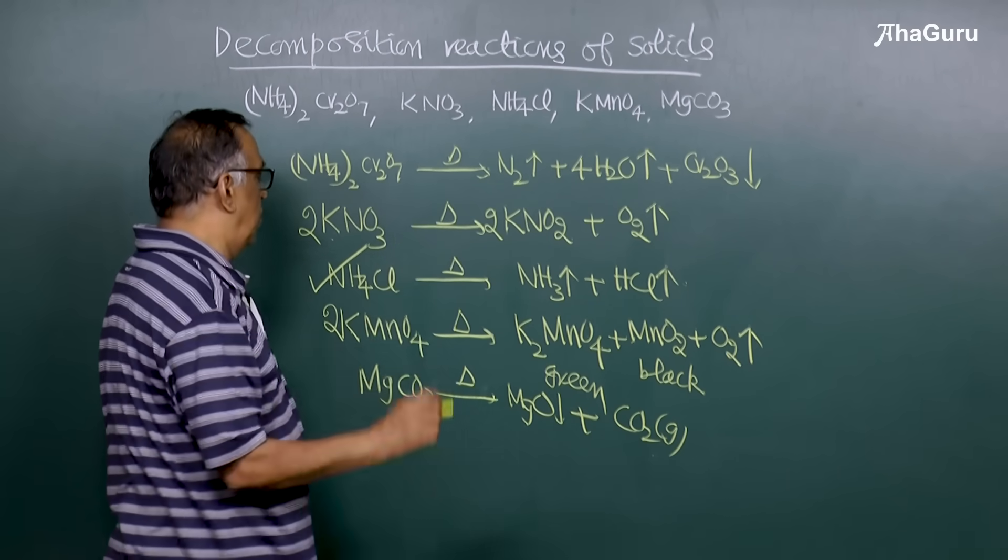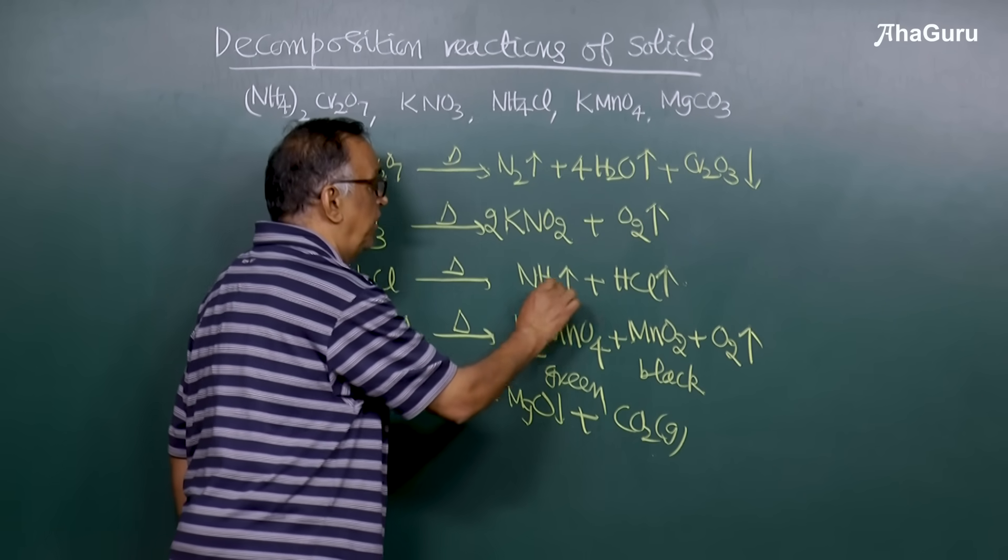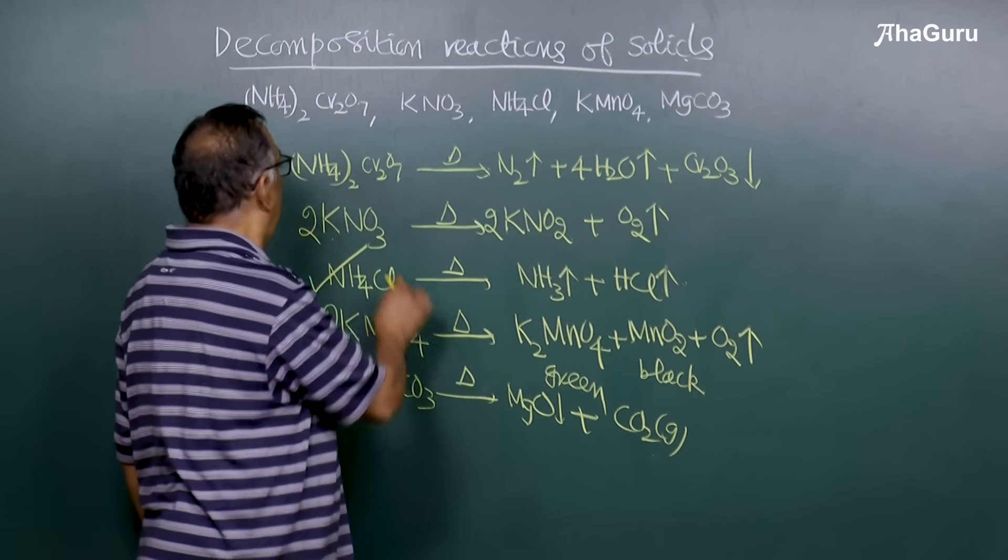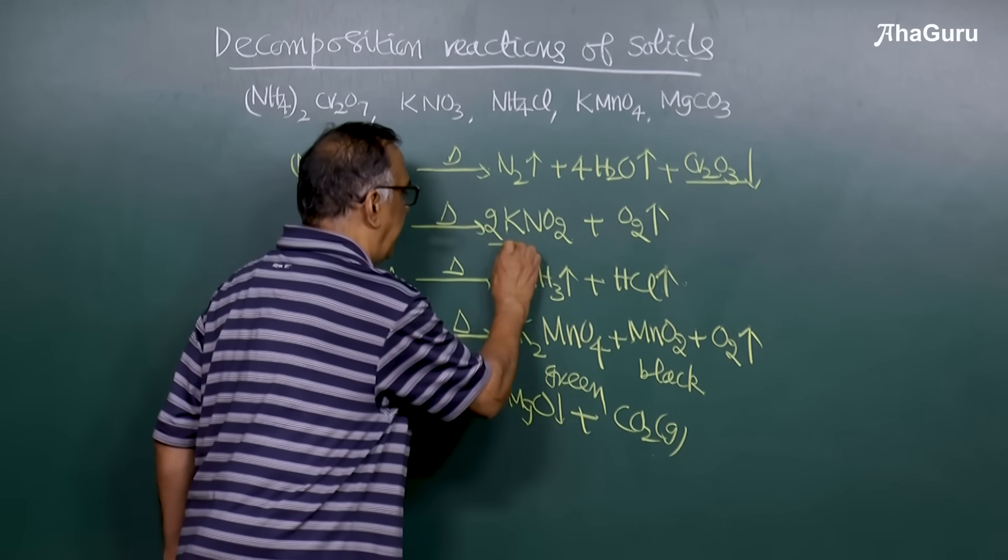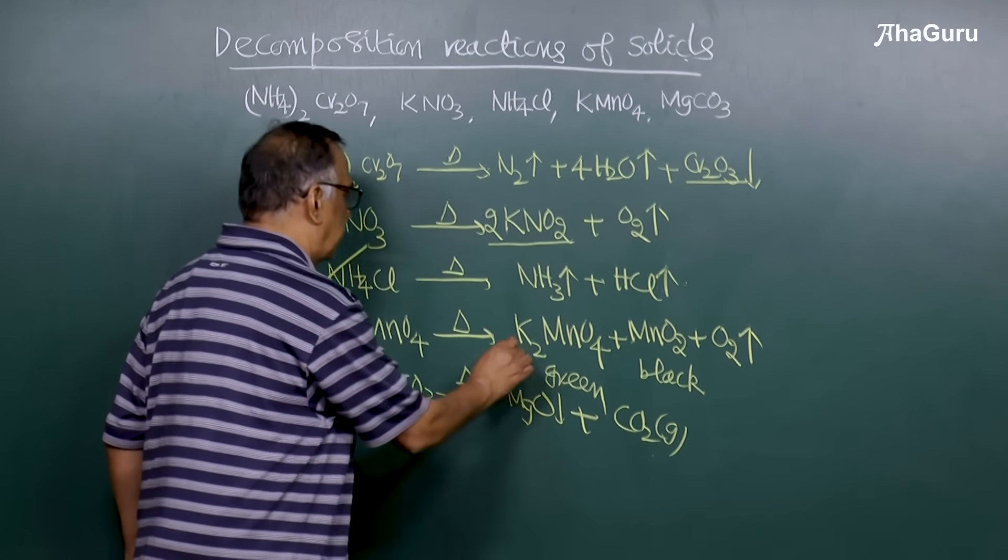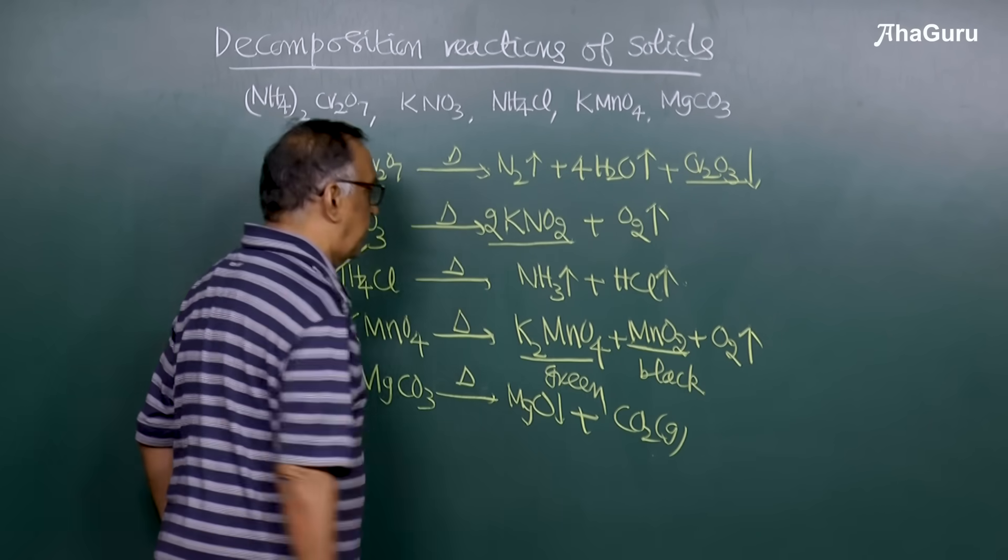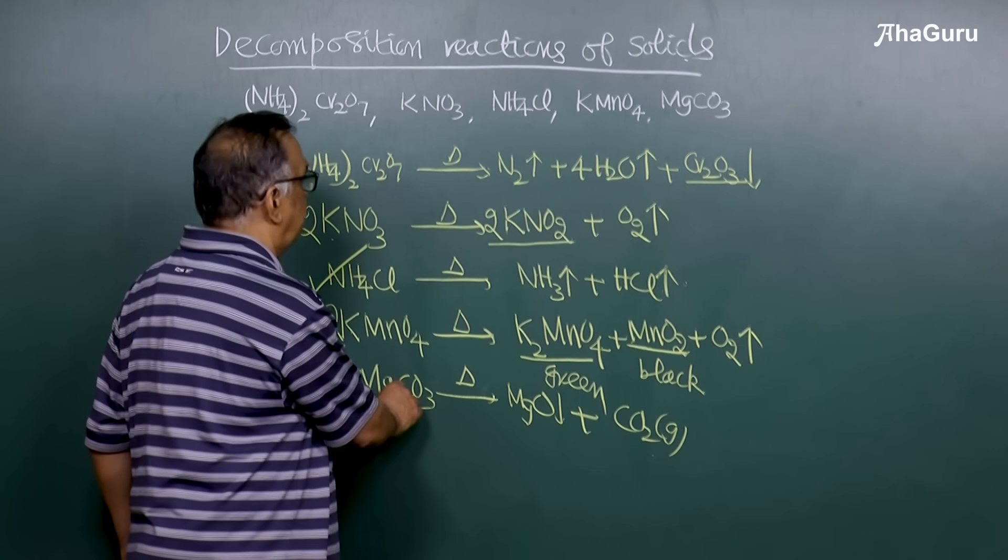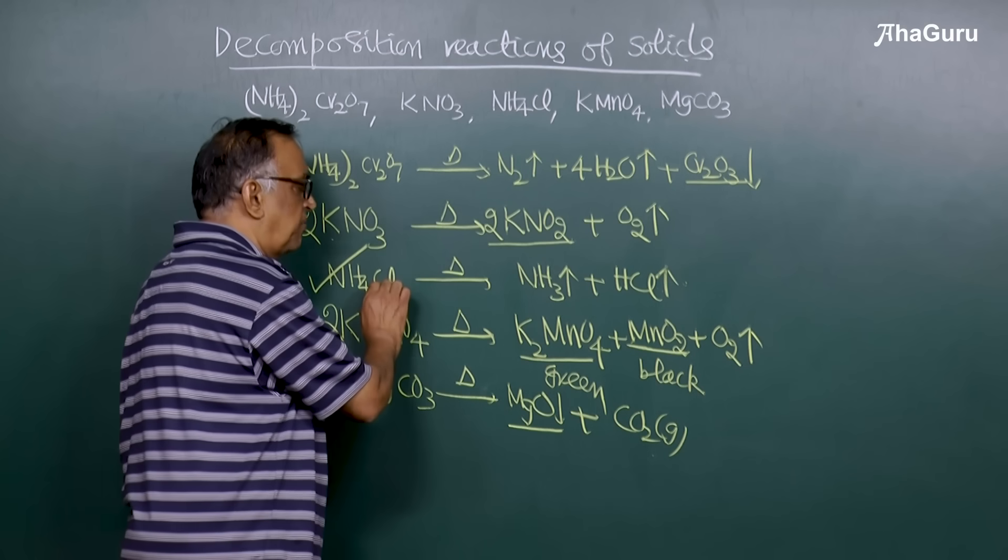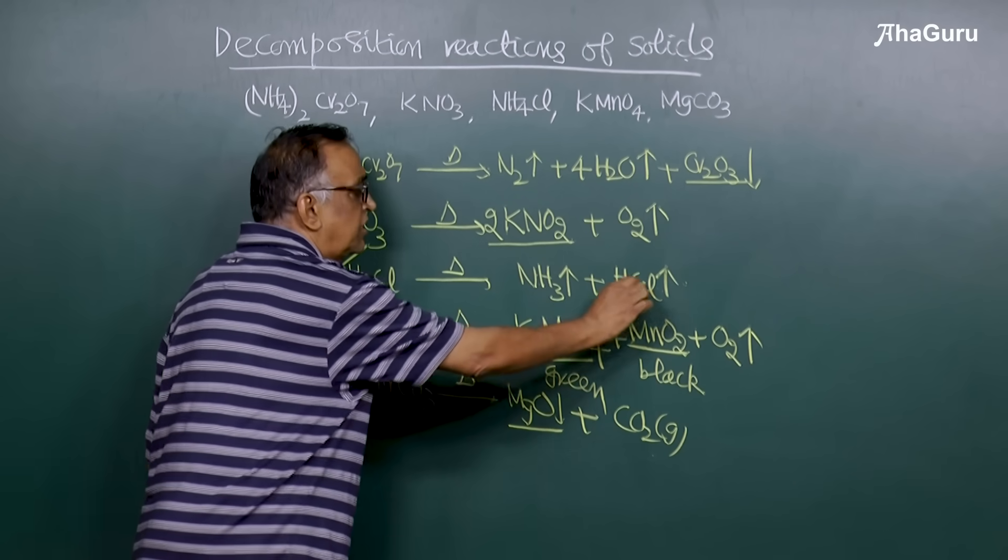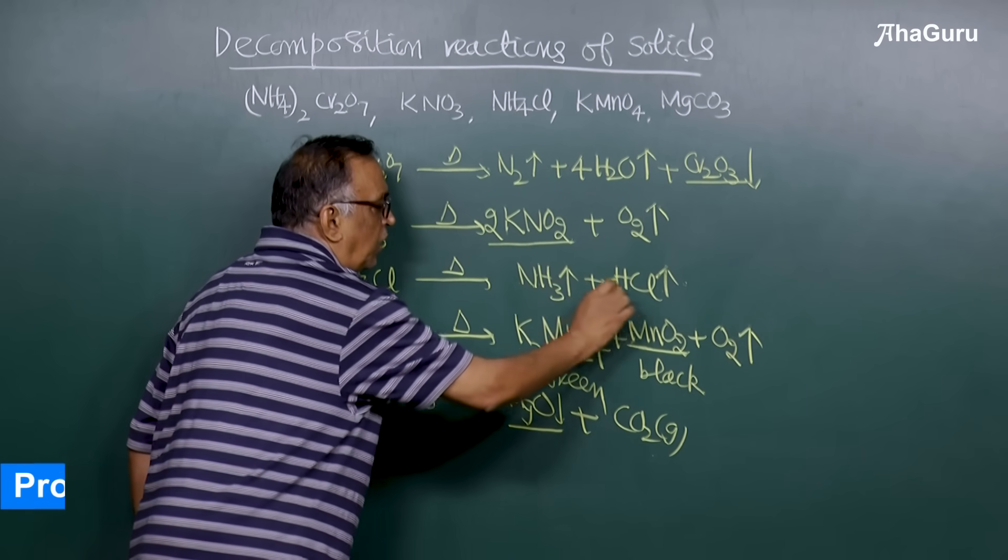Ammonium chloride alone is a solid which on heating leaves no residue because both products are volatile. In all other cases: Cr2O3 is the residue in the first case, potassium nitrite in the second case, potassium manganate and manganese dioxide in the fourth case, and magnesium oxide in the last case. Only ammonium chloride leaves no residue because both products escape as gases.